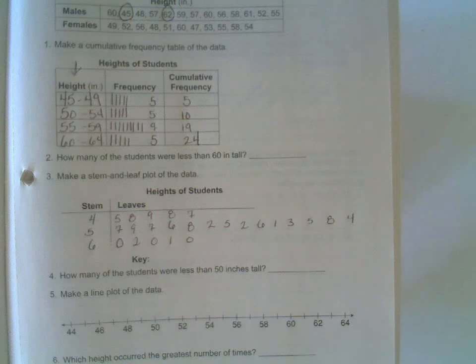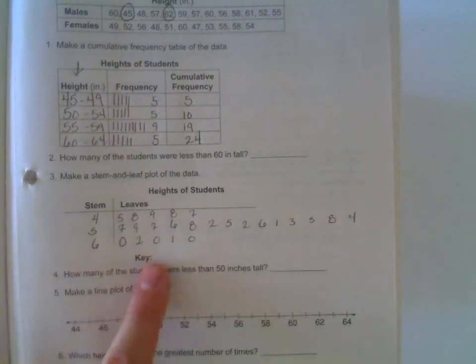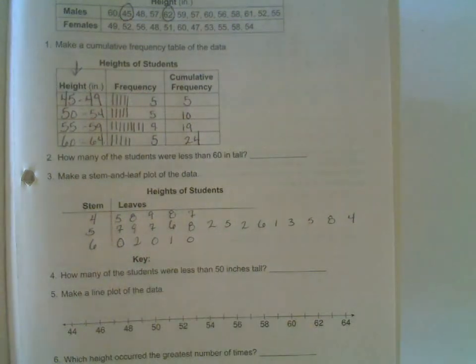And there is your stem-and-leaf plot. Now, what you do down here next to where it says key is you're going to pick out one little piece of the data to show what that actually means.